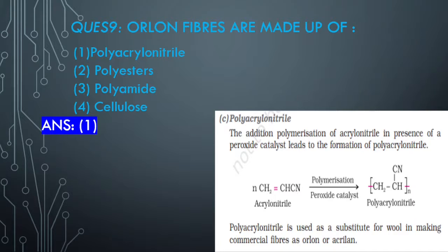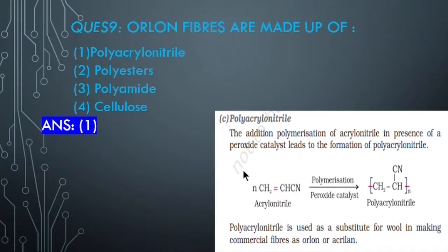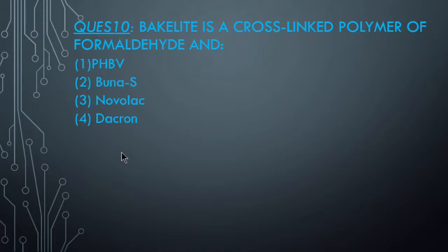You can read under the addition polymer uses section. Once you keep all the charts in your mind, your chapter is summarized. What next? You have to try to remember the uses. For example, polyacrylonitrile is used as a substitute for wool in making commercial fibers as Orlon or Acrilan. Question 11: Bakelite is a crosslinked polymer of formaldehyde and? Answer it within 10 seconds. The answer is Novolac.